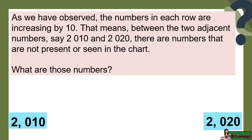As we have observed, the numbers in each row are increasing by 10. That means, between the two adjacent numbers, say 2,010 and 2,020, there are numbers that are not present or seen in the chart. What are those numbers?